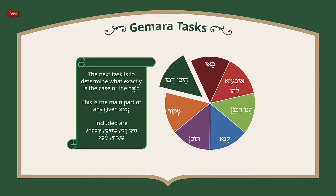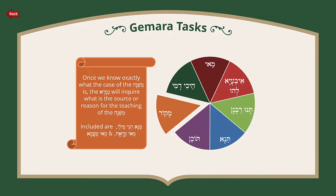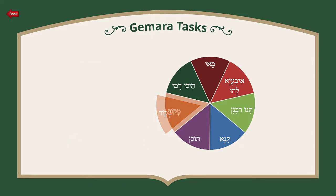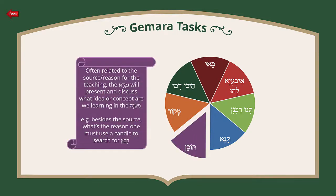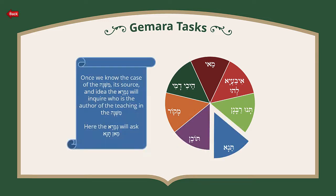The next task is the Makor — the source. Once we know exactly what the case of the Mishnah is, the Gemara will inquire what is the source or reason for the teaching of the Mishnah. Included are Minah Nami Lei, Mai Kra, or Mai Ta'ama — where we're asking for the source or reason for any given teaching. Then we have the Toichen — often related to the source or reason for the teaching — where the Gemara will present what idea or concept we are learning. For example, besides the source that you use a candle to search for chametz, we ask why must one use the candle specifically — and the Gemara says because a candle is effective for searching, unlike a torch. The next task is to determine who is the Tanna — the author of this teaching. Once we know every word, the case, the source, and the deeper concept, the Gemara will inquire who is the author of the teaching in the Mishnah, asking 'Man Tanna.'